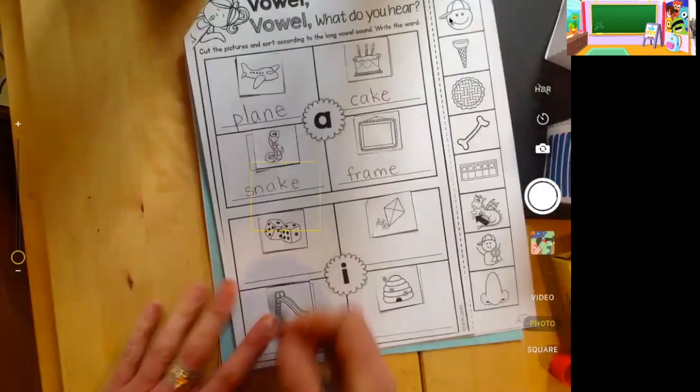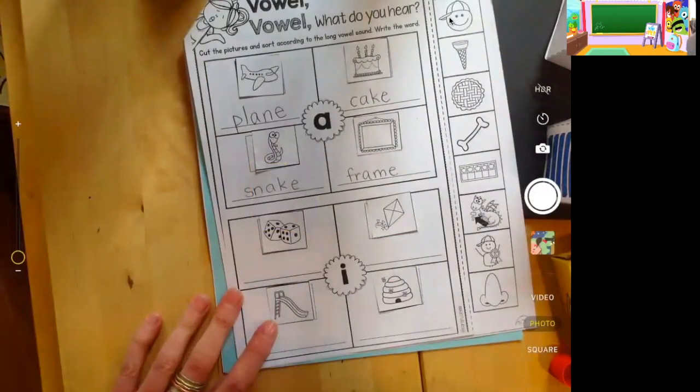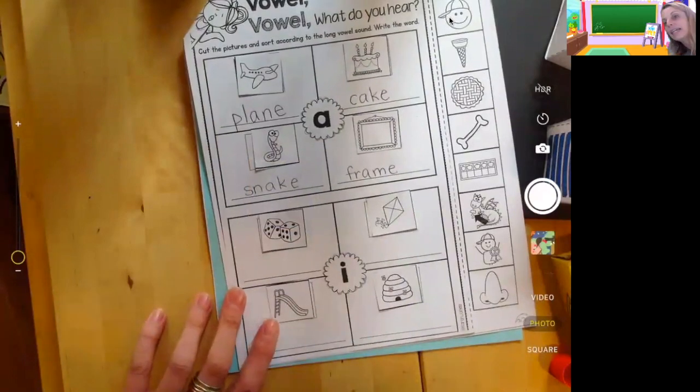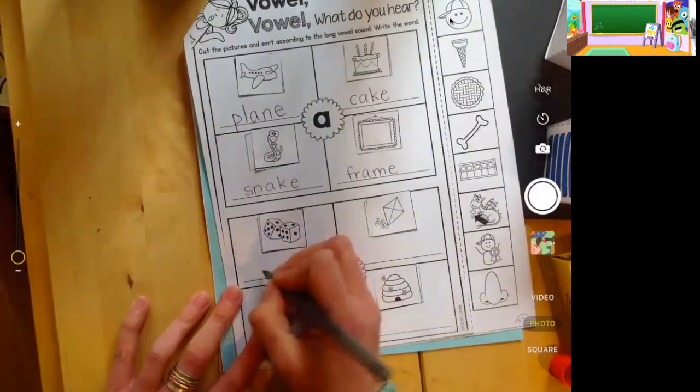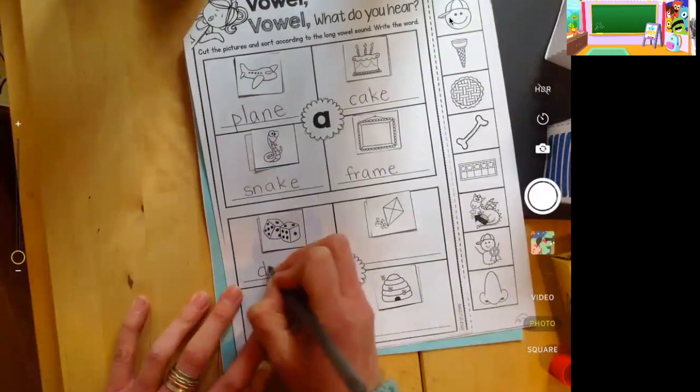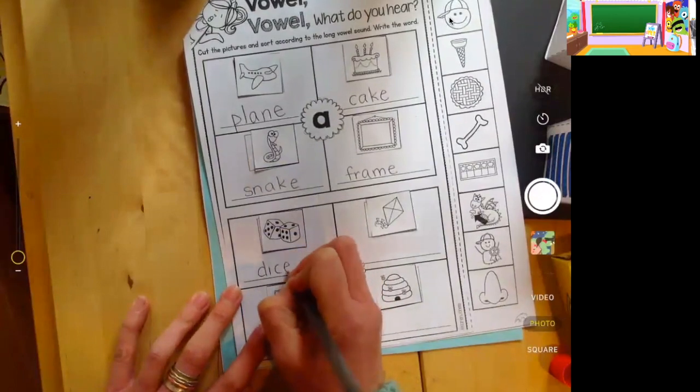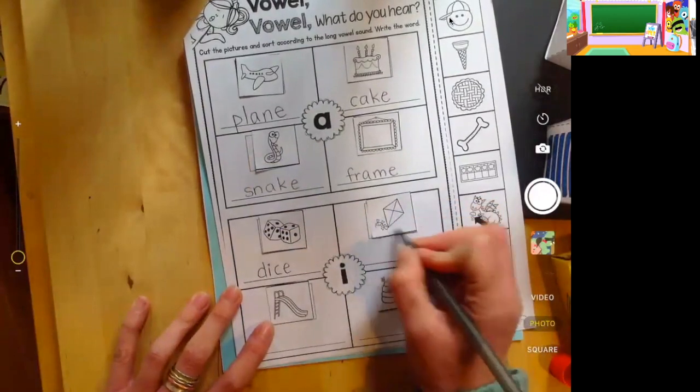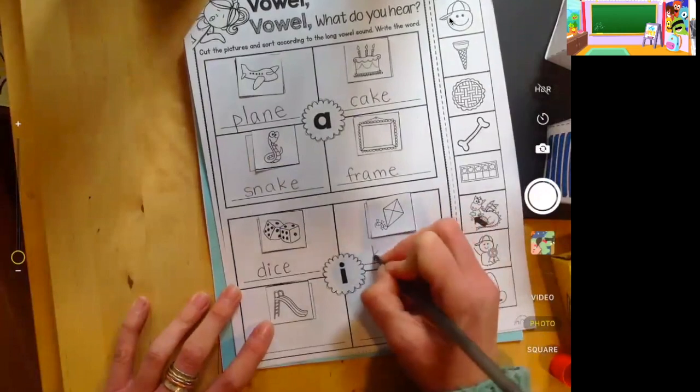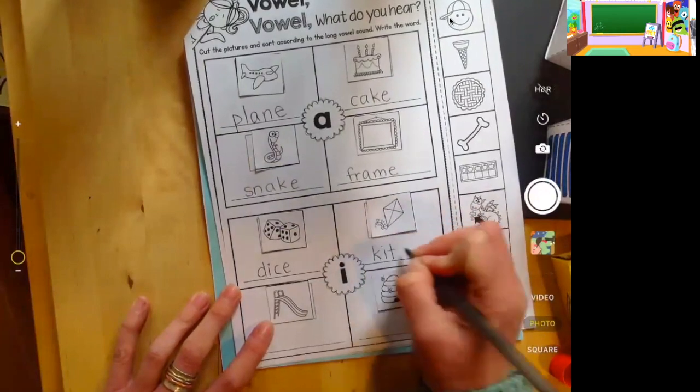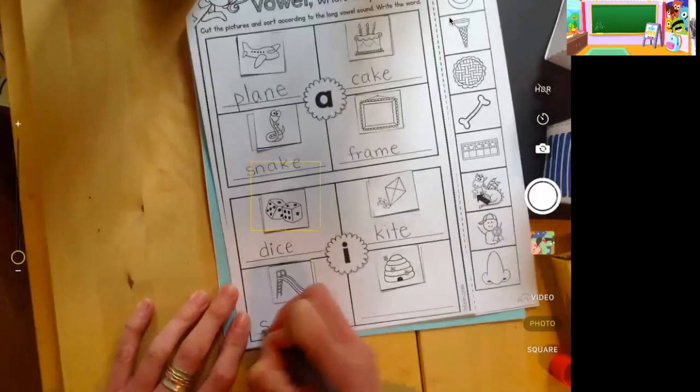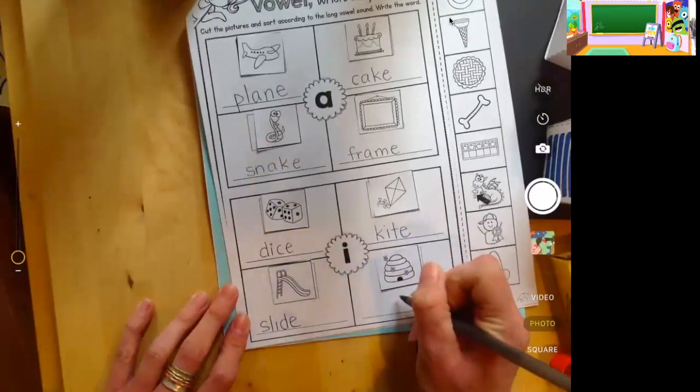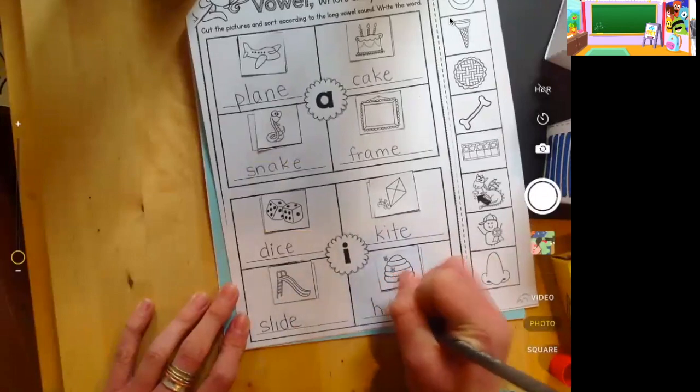Now to our I. Dice. Remember that the s sound at the end can be a C too, which we'll learn about later on. But for now, you need to know this is dice. Tricky C, trying to pretend like it's an S. And then we have kite. Slide. And hive.